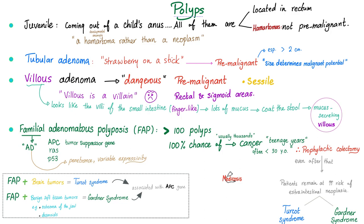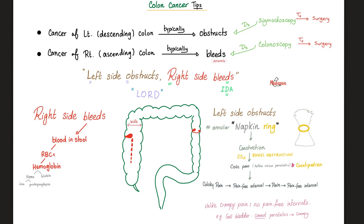Sometimes FAP is associated with brain tumors — when you have colon cancer and a brain tumor together, it's called Turcot syndrome. How do you remember that? Turco → turban → head → brain. There is another one called Gardner syndrome, where you have a garden variety of tumors: benign soft tissue tumors, osteomas of the jaw, desmoids, etc.